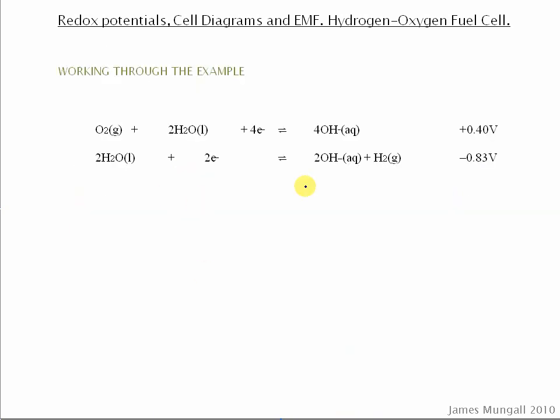So using that, we can see that the oxygen one here is more positive, so that is the one which will go in the forward direction. It is reduction because you're gaining the electrons, and we'll put this on the right hand side of the cell diagram.